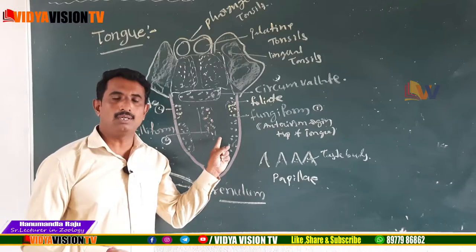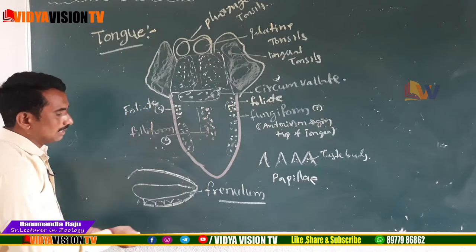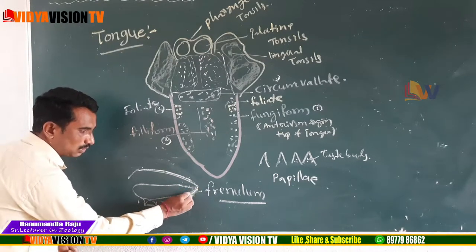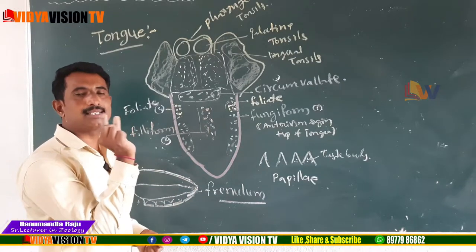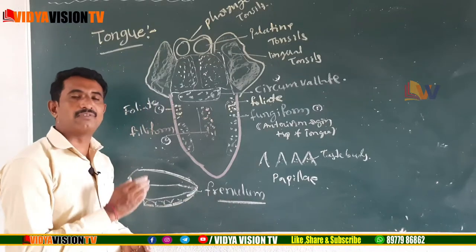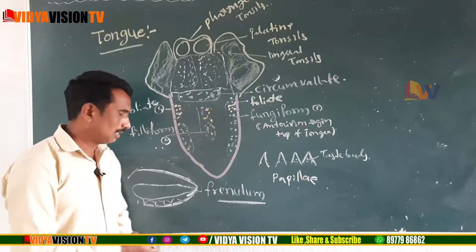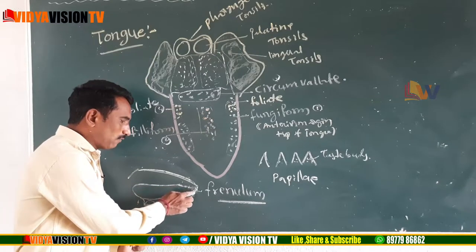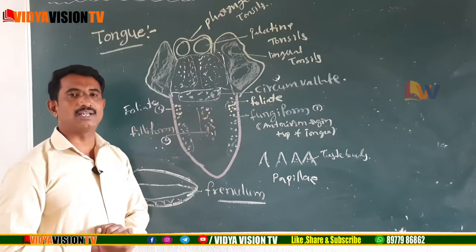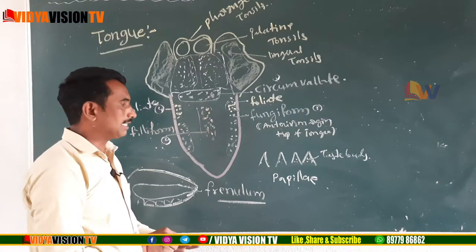The tongue is attached to the floor of the buccal cavity by a fold-like structure called the frenulum. The frenulum is a very important word — it is the fold by which the tongue is attached to the floor of the buccal cavity.